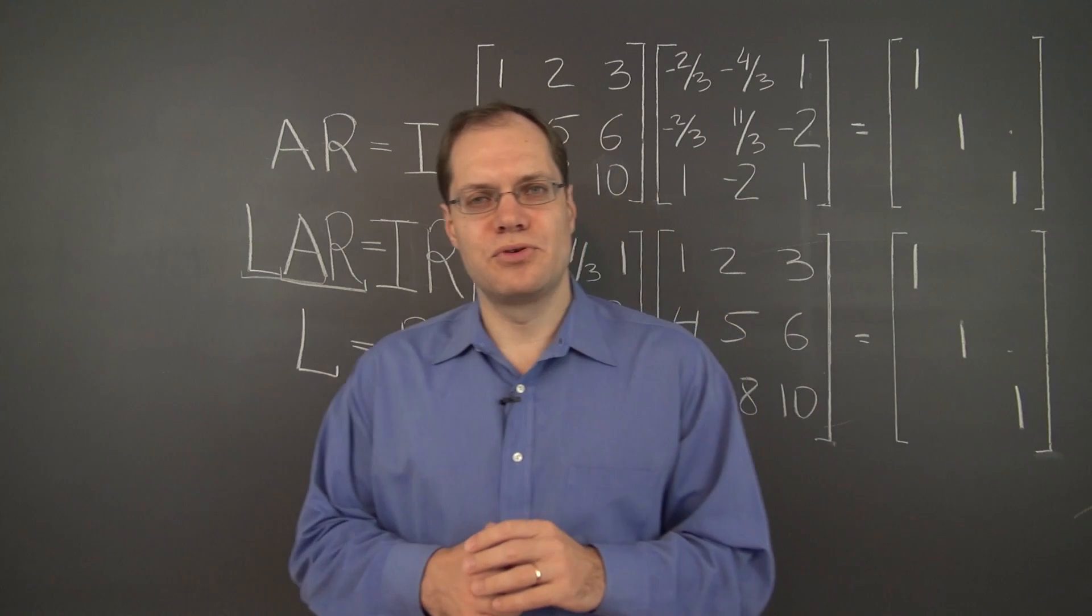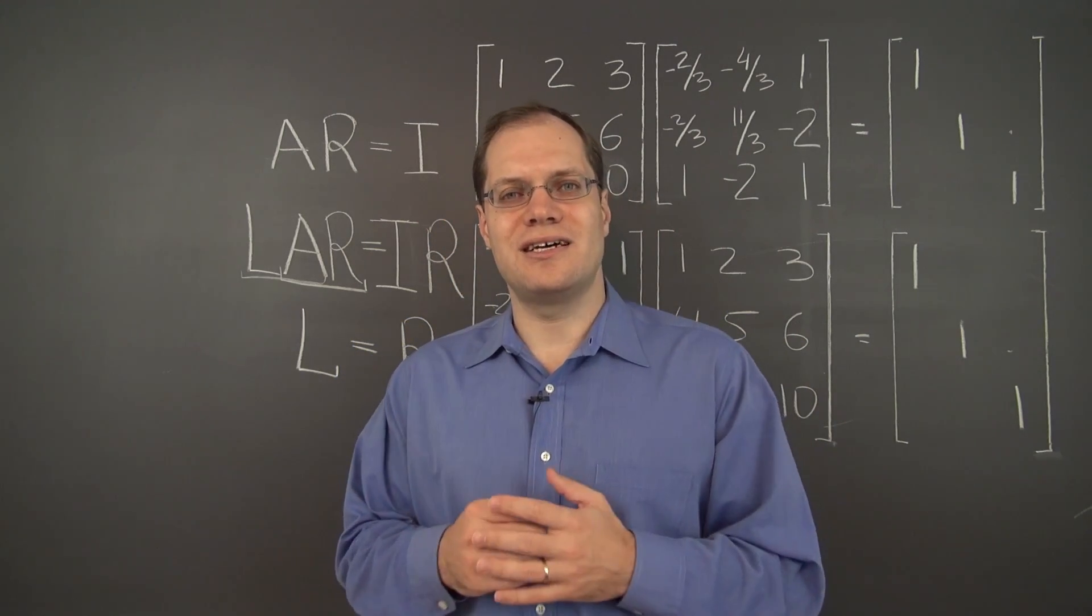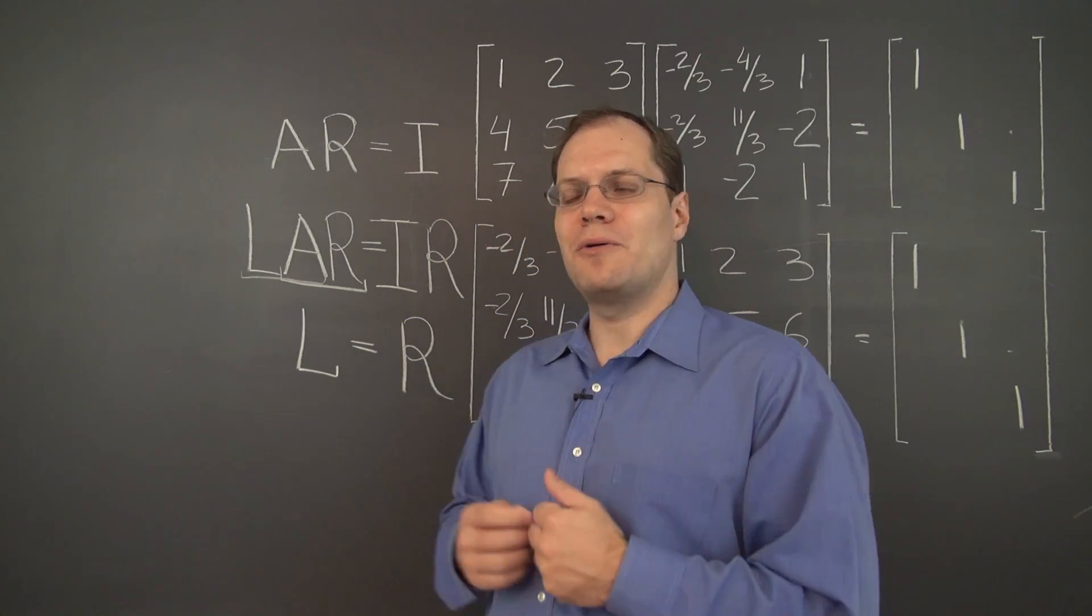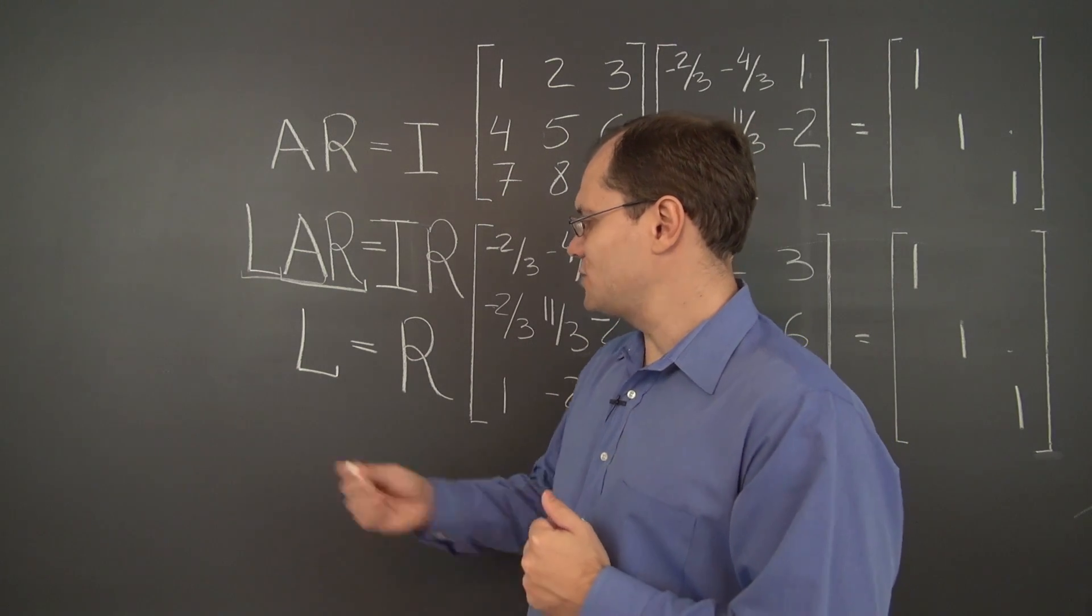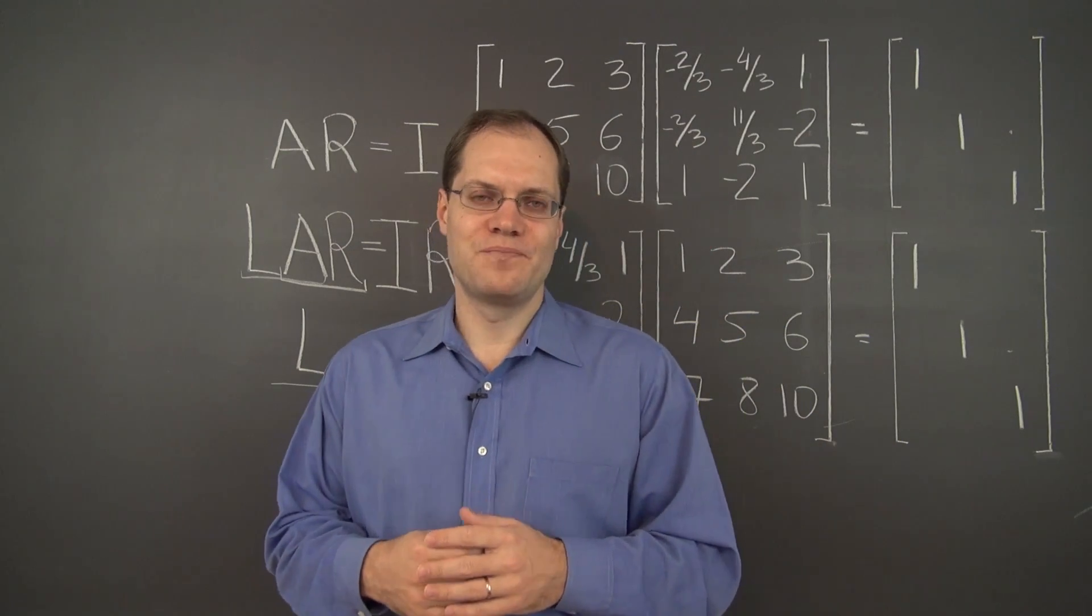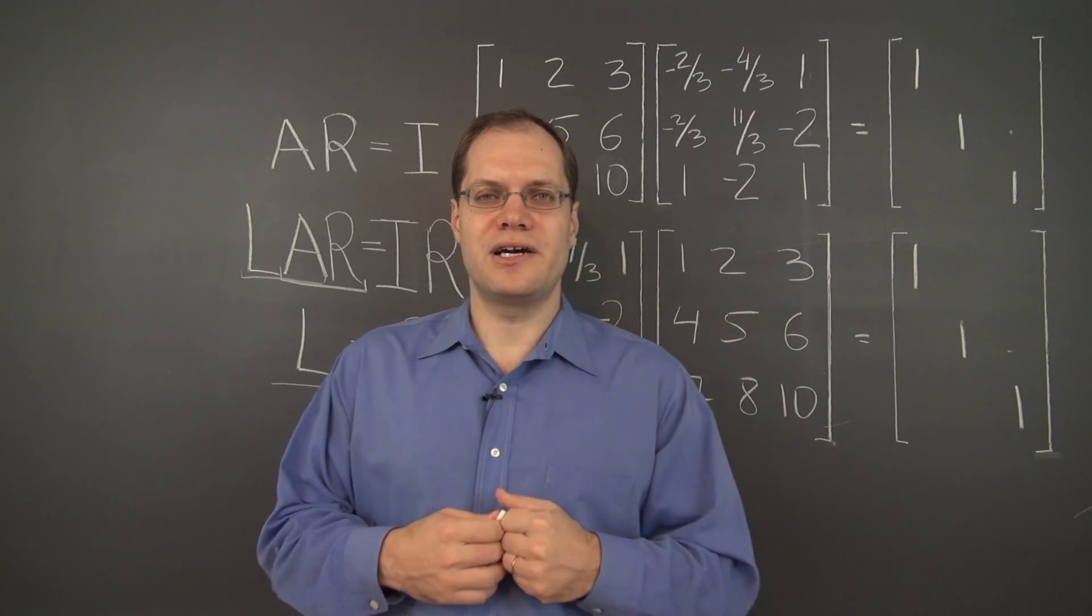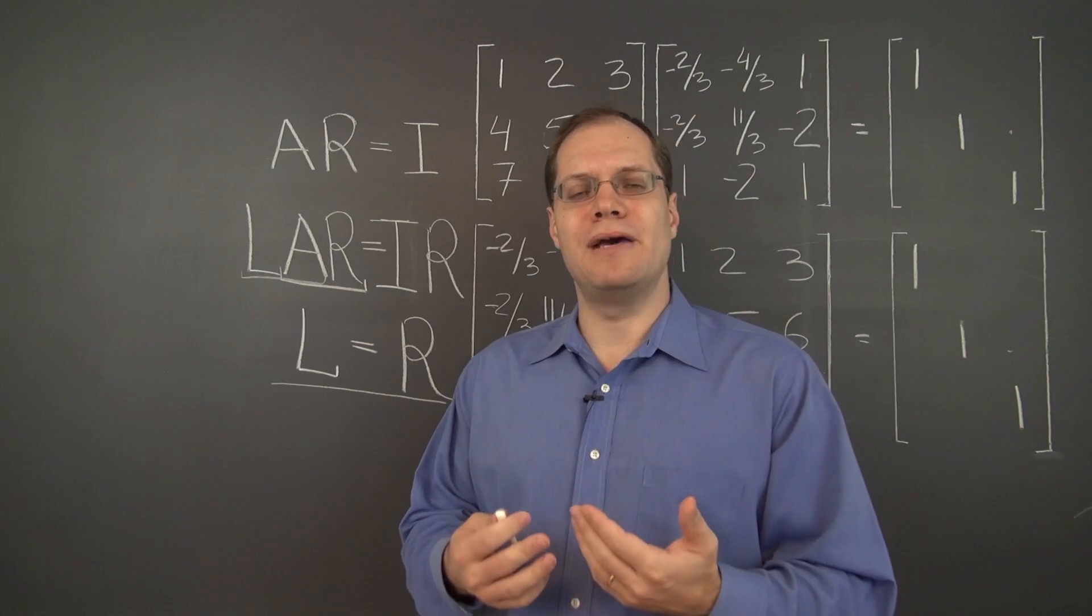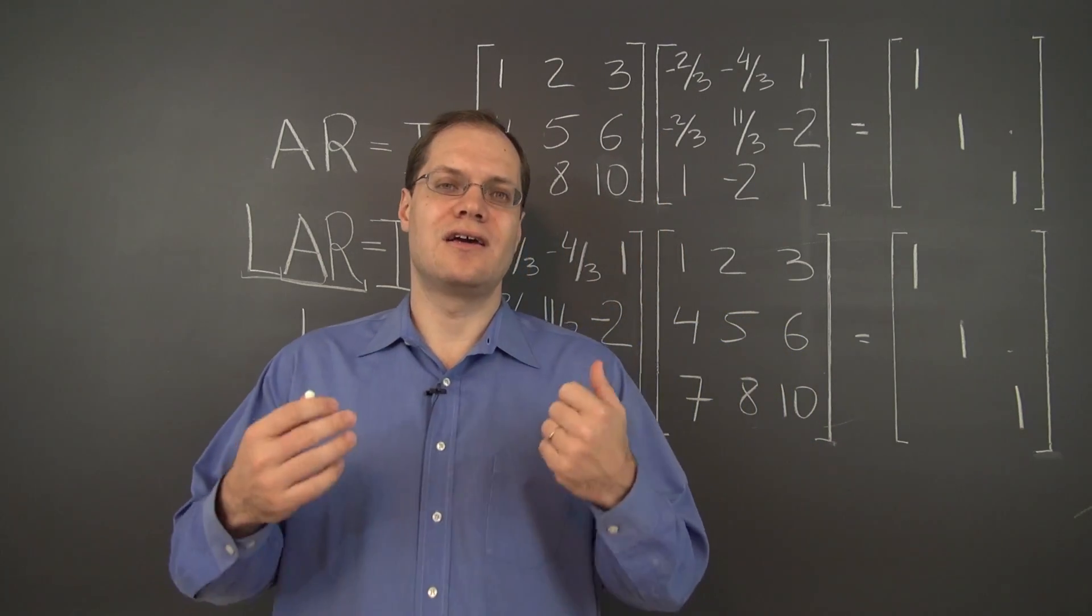And you will find this proof in any introductory text on group theory, probably on page 2. So there we go. This is a very short and very fundamental proof of the fact that the left inverse equals the right inverse or equivalently that matrix and its inverse commute.